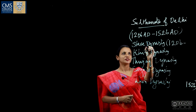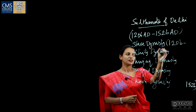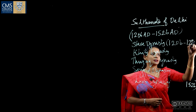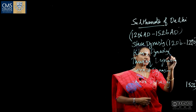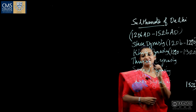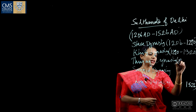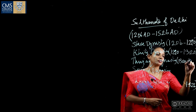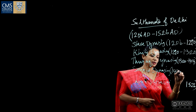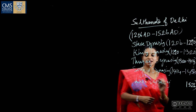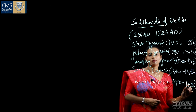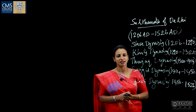Looking into the timeline of the Sultanate of Delhi: the Slave Dynasty extended from 1206 to 1290; the Kilji Dynasty from 1290 to 1320; the Tughlaq Dynasty from 1320 to 1414; the Sayyid Dynasty from 1414 to 1450; and the Lodhi Dynasty from 1450 to 1526.